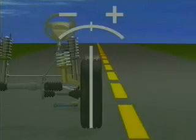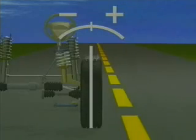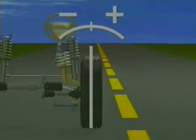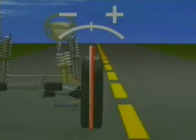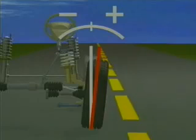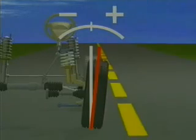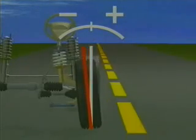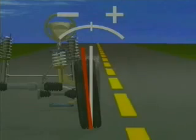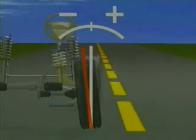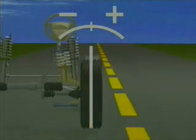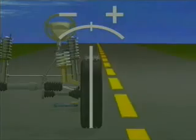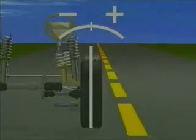Camber is measured in degrees. A wheel with zero degrees camber is vertical. When a wheel tilts outward at the top, it has positive camber, and when a wheel is tilted inward at the top, it has negative camber. A slight amount of negative camber is normal since the top of the tires will move out with speed.